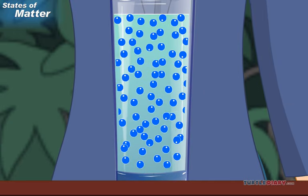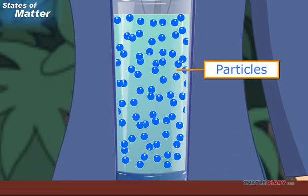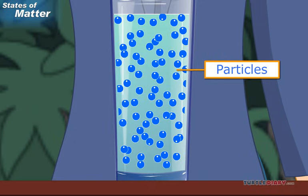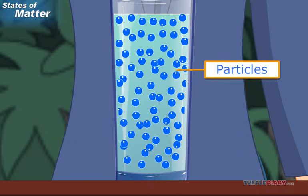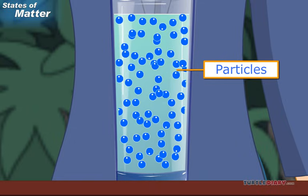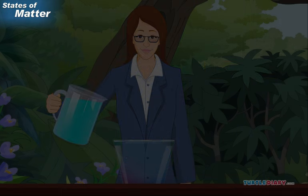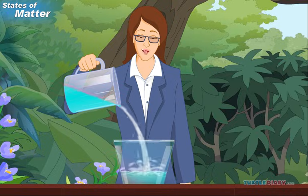Liquids are also made of little pieces called particles. The particles of a liquid are held together loosely. They move and slide across each other. When you pour water, it flows into a container.